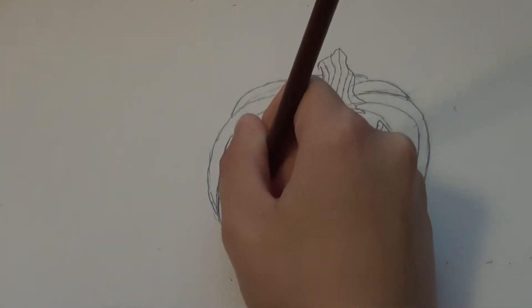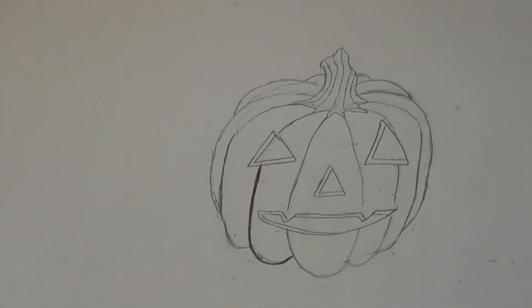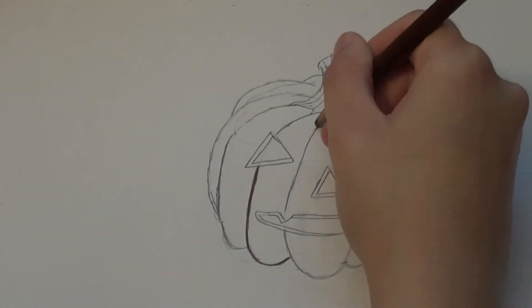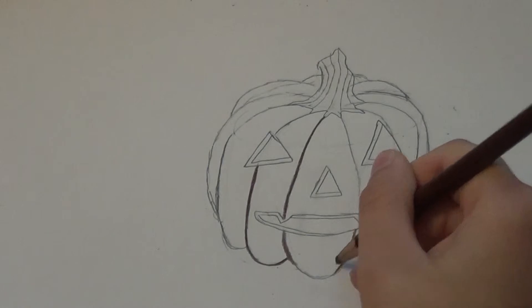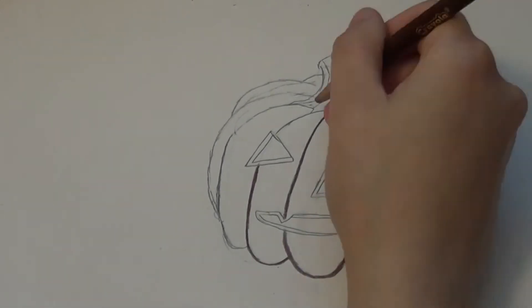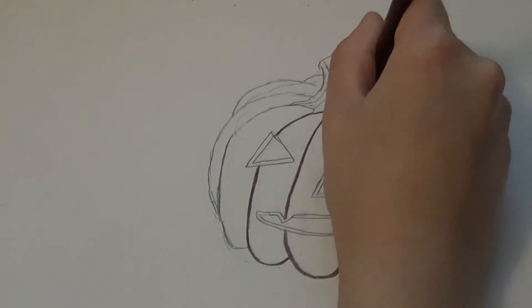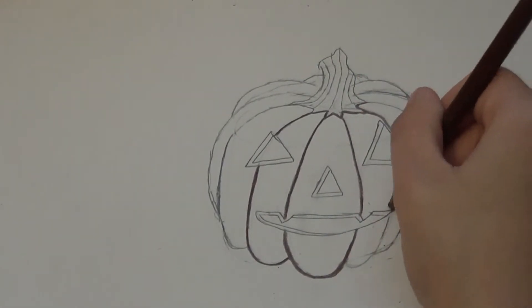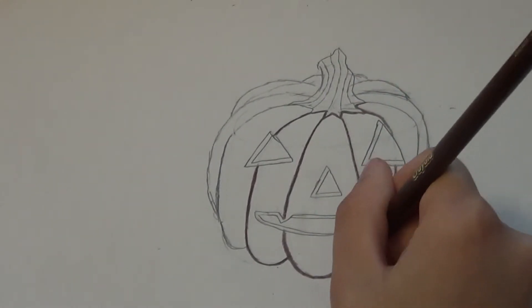So after I drew all these pencil lines, I went over all of them with a brown colored pencil except for the lines inside the stem. You want to make these lines thick but also smooth it out.